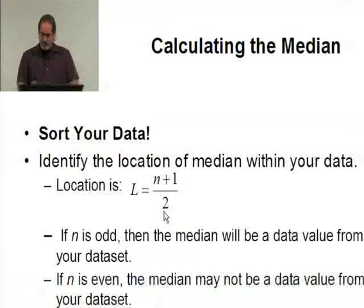In the example with 1, 2, and 3, N is 3. 3 plus 1 is 4 divided by 2 is 2, the second value. 1, 2, there it was.